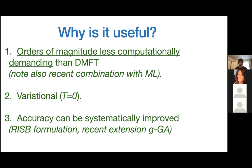I point out three key reasons. The first one is that it's orders of magnitude less computationally demanding than the MFT, so it's relatively fast. I will be very precise about why and how much. There are also recent developments about how to combine this with machine learning that may make this method basically as fast as classical approximations to DFT.